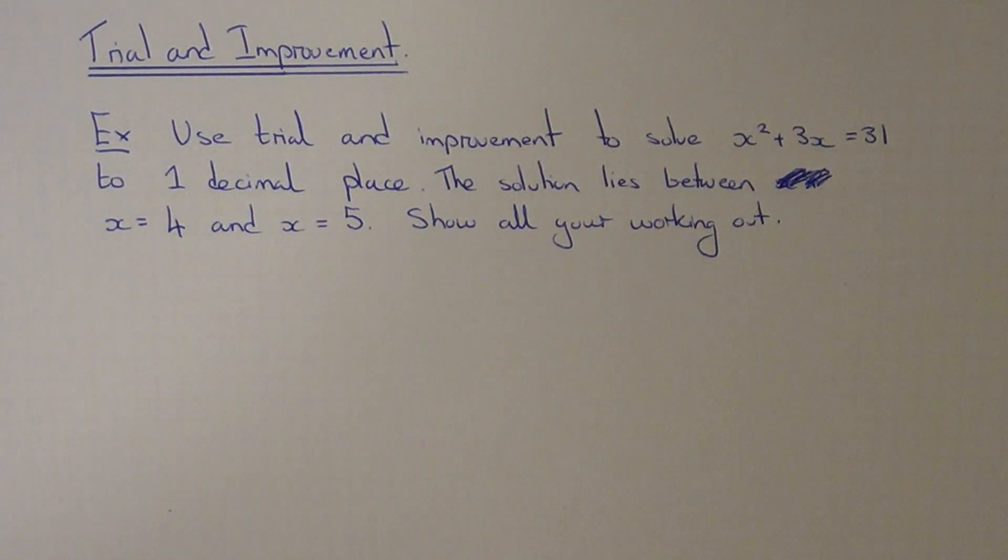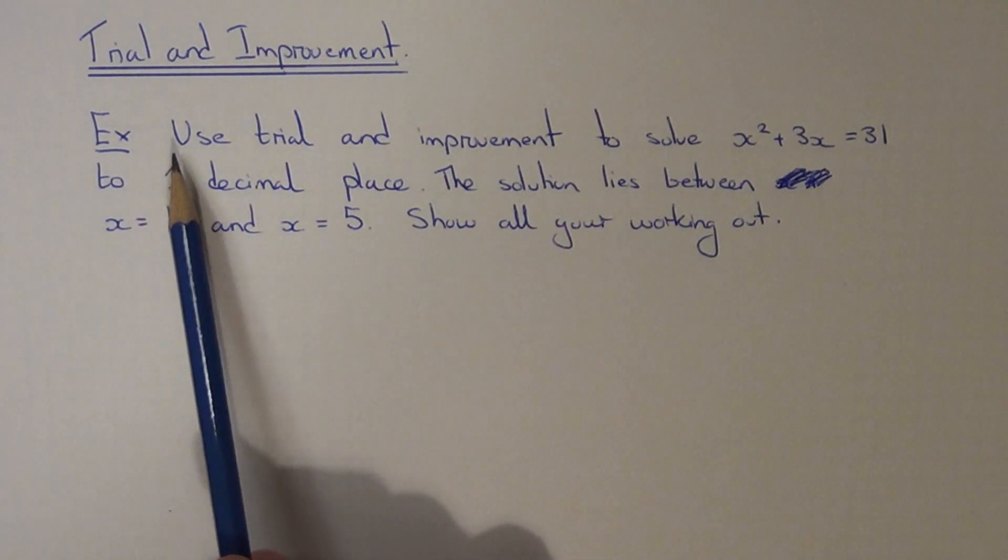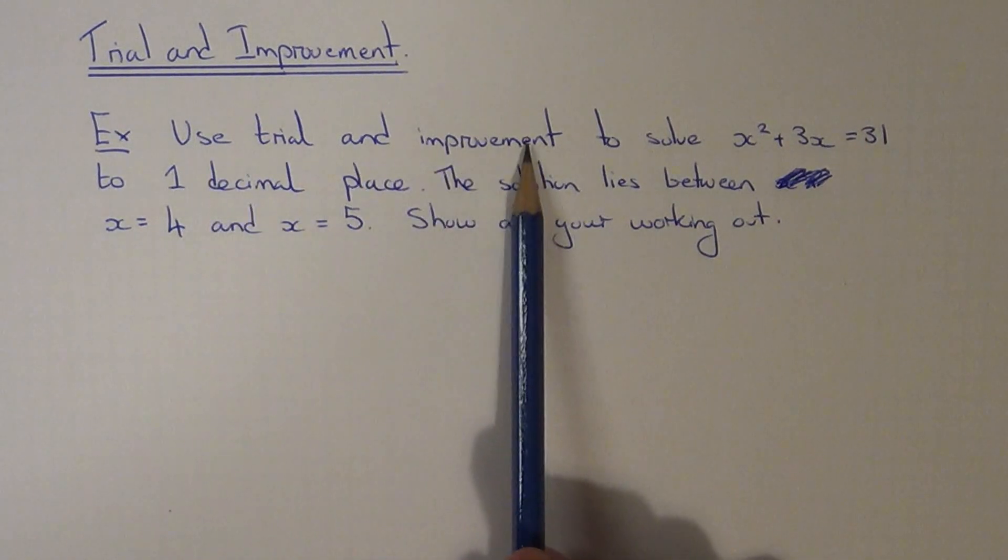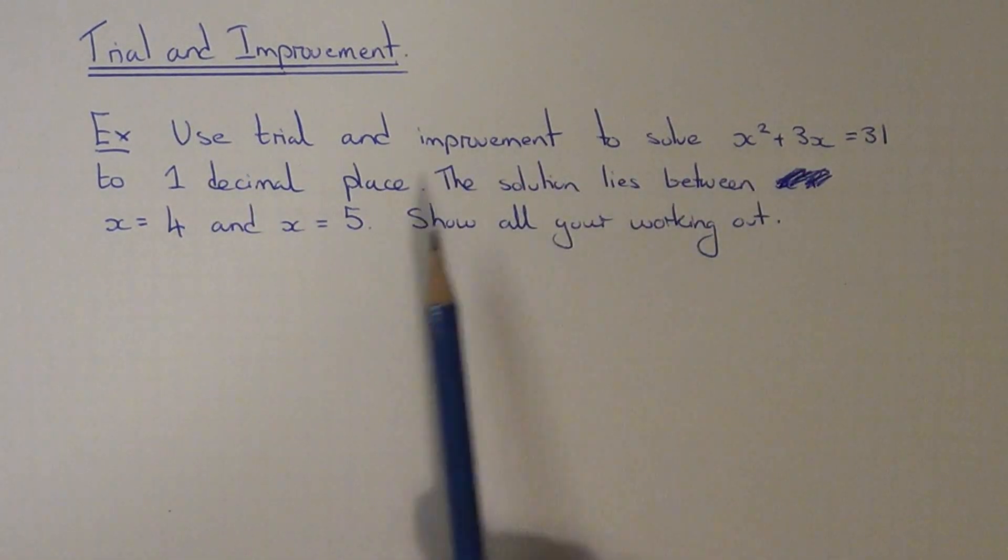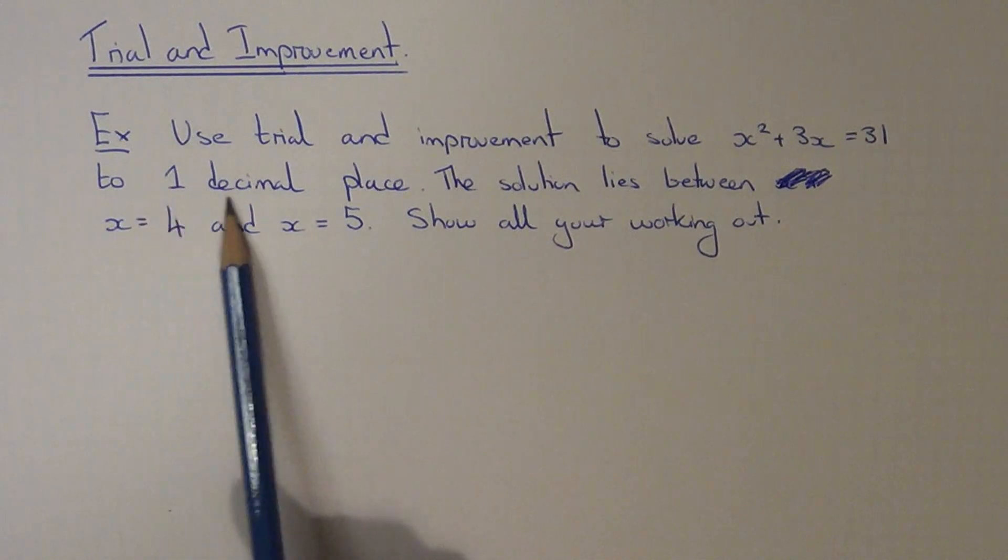Today I'm going to show you how to solve an equation using the trial improvement method. So let's take a look at an example. The question asks us to use trial improvement to solve x squared plus 3x equals 31 to one decimal place.